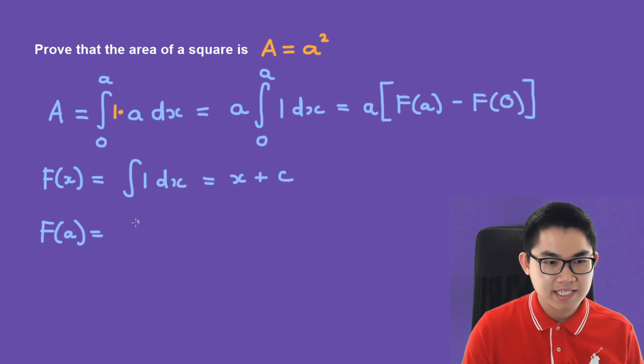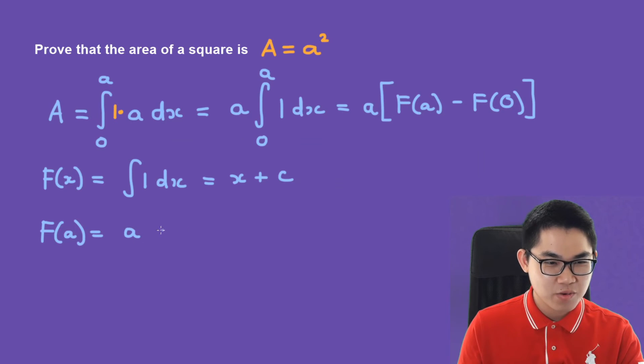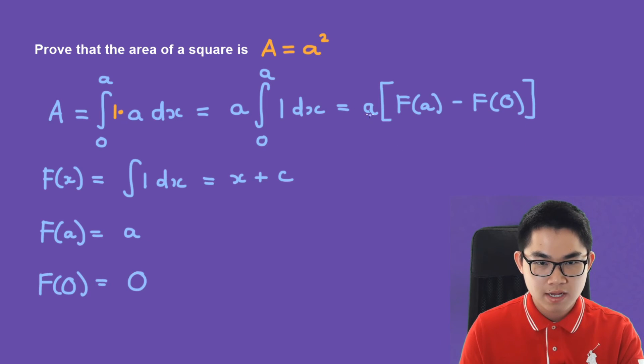We just replace x with a, and note that we don't need to write plus c. We only write plus c when we're trying to find the anti-derivative, but when you already substituted a number into f of x then we no longer need to write plus c. Now same thing with f at 0, so we replace x with 0.